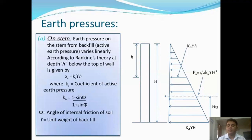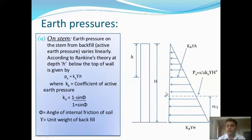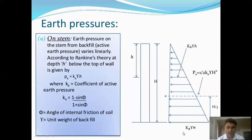As you can see on screen, the pressure distribution is in a triangular form. The vertical member has a triangular form, meaning the soil pressure at the top is zero and increases with depth. As depth increases, the soil pressure increases. At the bottom, the maximum soil pressure equals KA·γ·H, where KA is the coefficient of active earth pressure calculated as (1 - sin φ) / (1 + sin φ), γ is the unit weight of soil in kN/m³, and H is the total depth of soil.